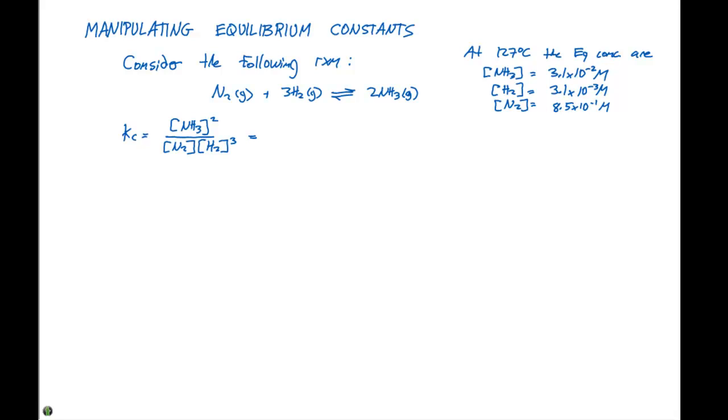If we plug the numbers in for this, we have 3.1 times 10 to the minus two, that quantity squared, divided by 8.5 times 10 to the minus one times 3.1 times 10 to the minus three, and that's going to be raised to the third power. If we multiply this out, we can determine Kc to be 3.8 times 10 to the fourth molar to the minus two.